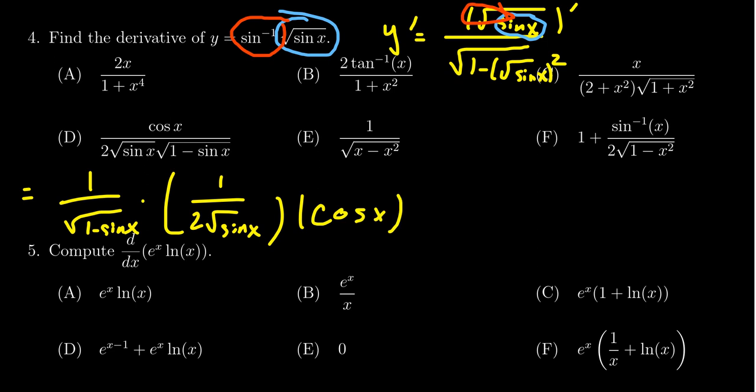So it looks like our answer should be cosine over two times the square root of sine times the square root of one minus sine, which we then see that d would then be the correct answer after we use this double application of the chain rule. Plus also we need to know the derivative of sine and sine inverse.